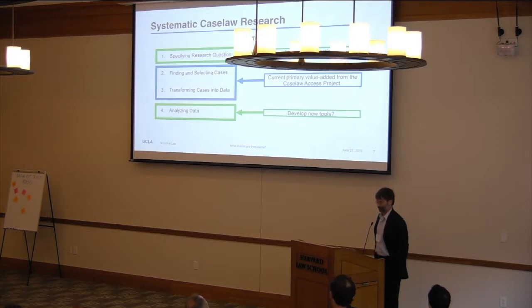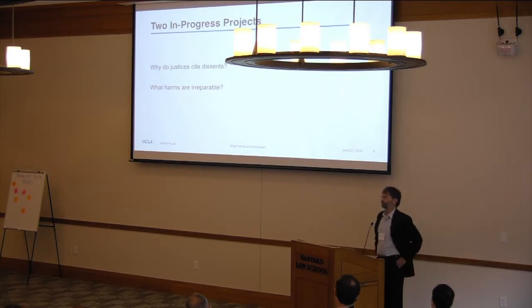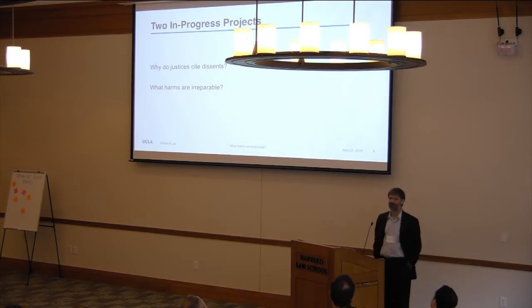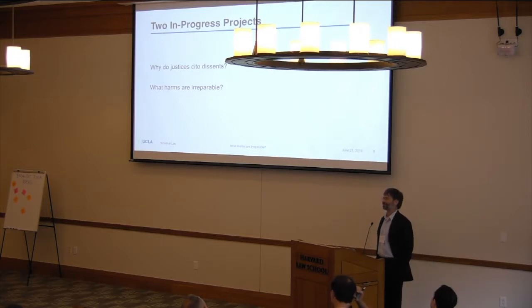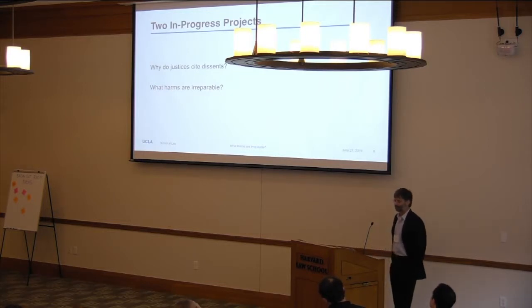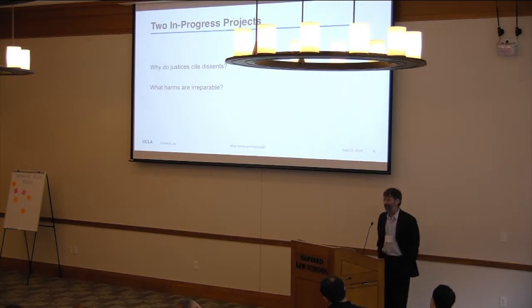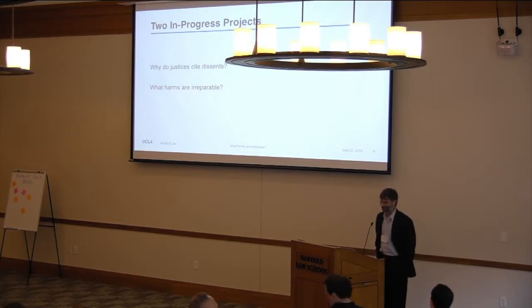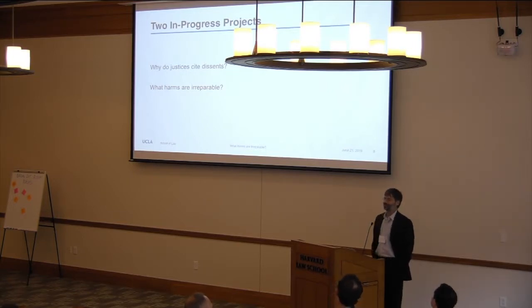I'm going to talk about two projects that are underway — fairly traditional or straightforward legal questions, not necessarily new, but I think interesting. The first question is: why do justices cite dissents? I'm specifically going to be focusing on Supreme Court justices. The second project is building on and revisiting Laycock's work and more generally asking what harms are irreparable.